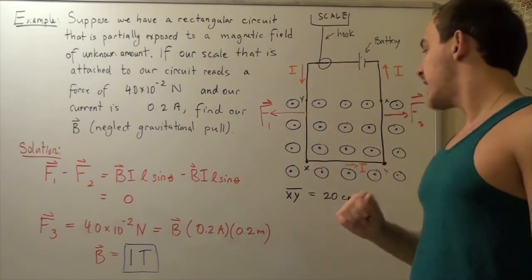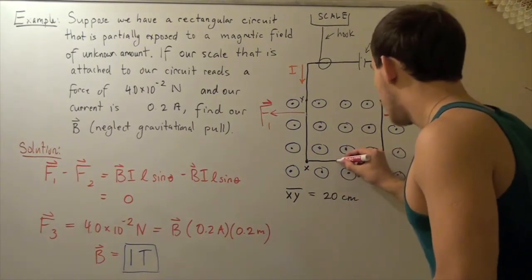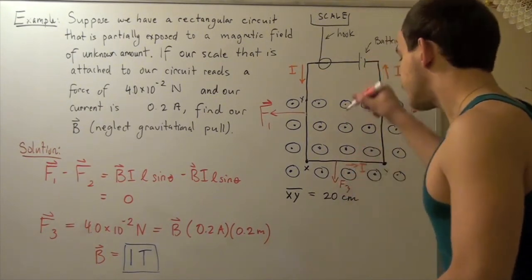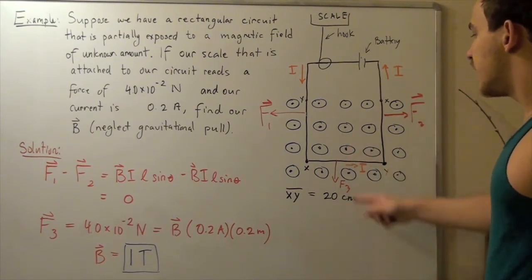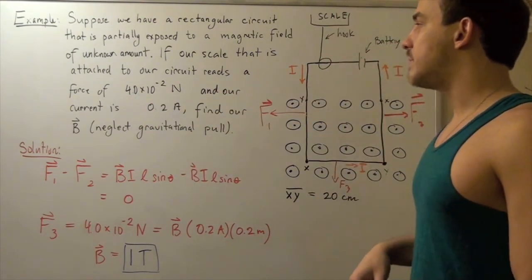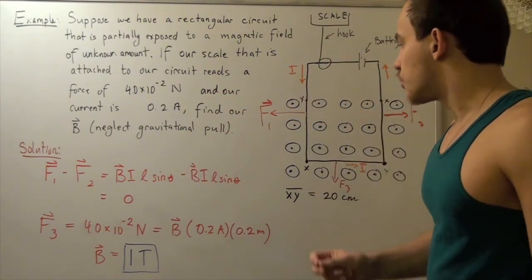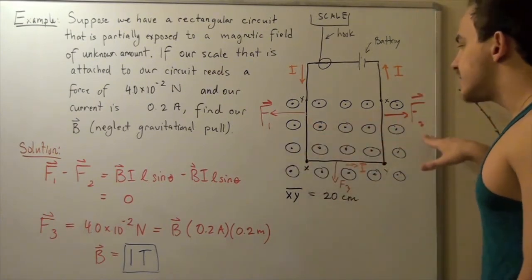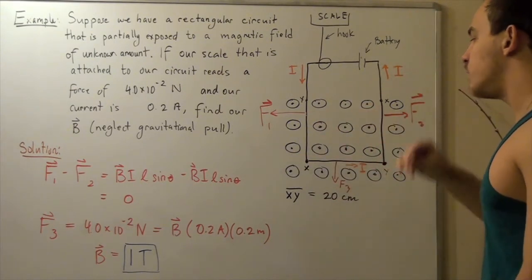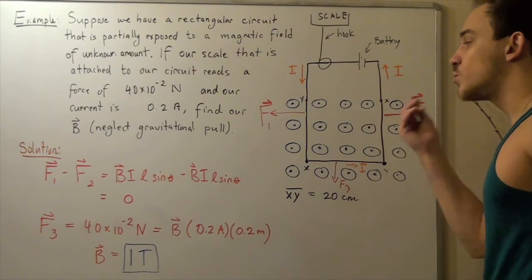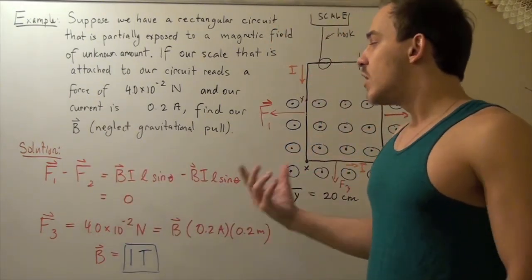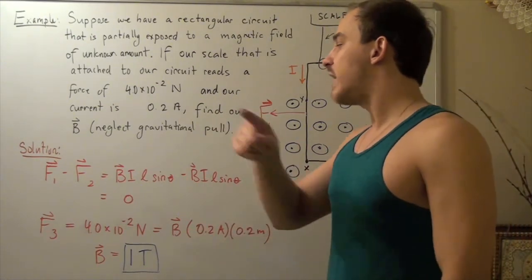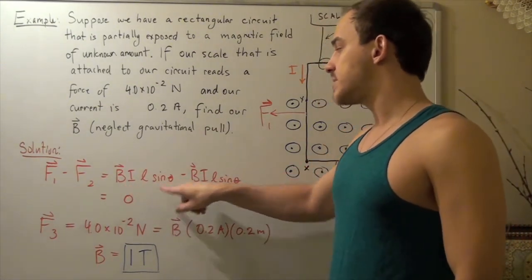Our force, let's call it F3, is pointing downward. And since it's the only force pointing downward, this guy is all by himself. And the force was given to us 4.0 times 10 to negative 2. In other words, we saw that these guys canceled out, so we don't have to worry about them. We only have to worry about this force. And this force was given. So, we used our equation F equals BIL times sine theta. We rearranged it to F divided by I times L times sine theta. And that gives us our magnetic field.